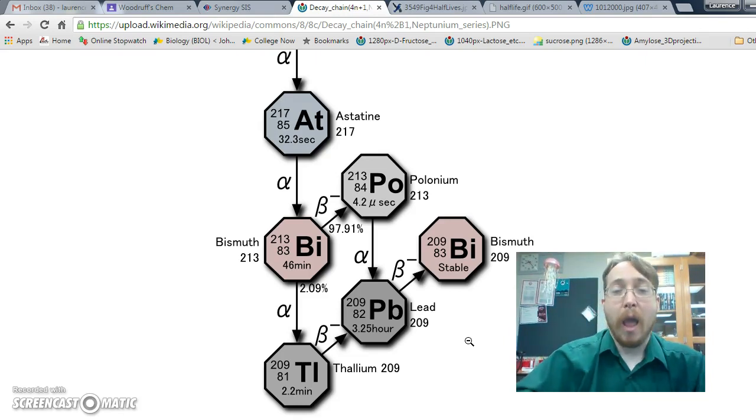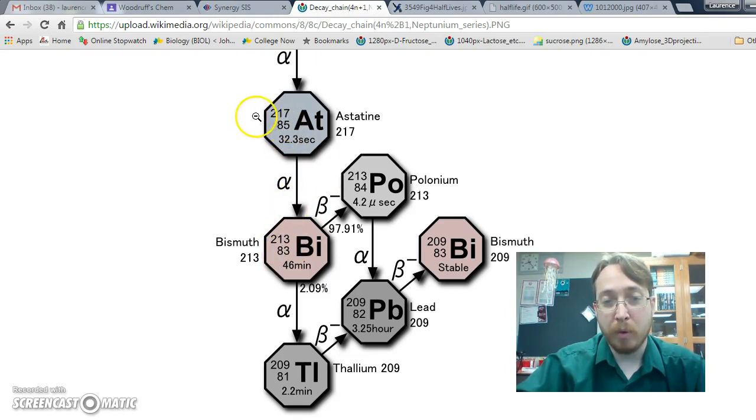Each one of these steps requires the math that we discussed earlier. In alpha decay, we've got to subtract two from the protons. 85 goes to 83. And because we're losing both two protons and two neutrons, our mass goes from 217 to 213. So that's how we get this bismuth-213.